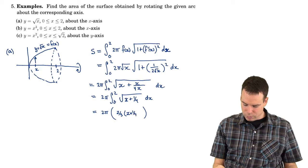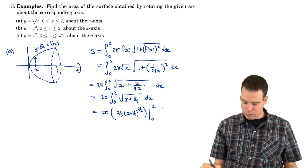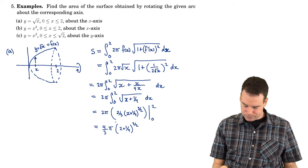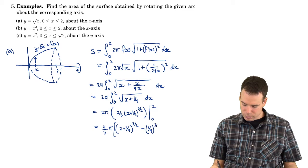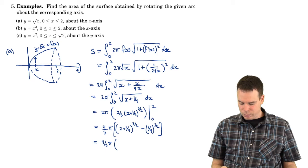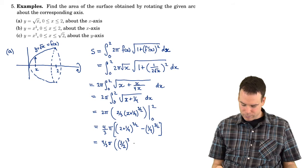The anti-derivative will be 2/3 times (x + 1/4) to the 3/2, using the power rule. Evaluating from 0 to 2, this becomes 2π — which we can factor out — giving 4π/3. Plugging in the bounds: (2 + 1/4) to the 3/2 minus (1/4) to the 3/2. Now 2 + 1/4 is 8/4 + 1/4 = 9/4. Taking 9/4 to the power of 3/2 gives (3/2)³.